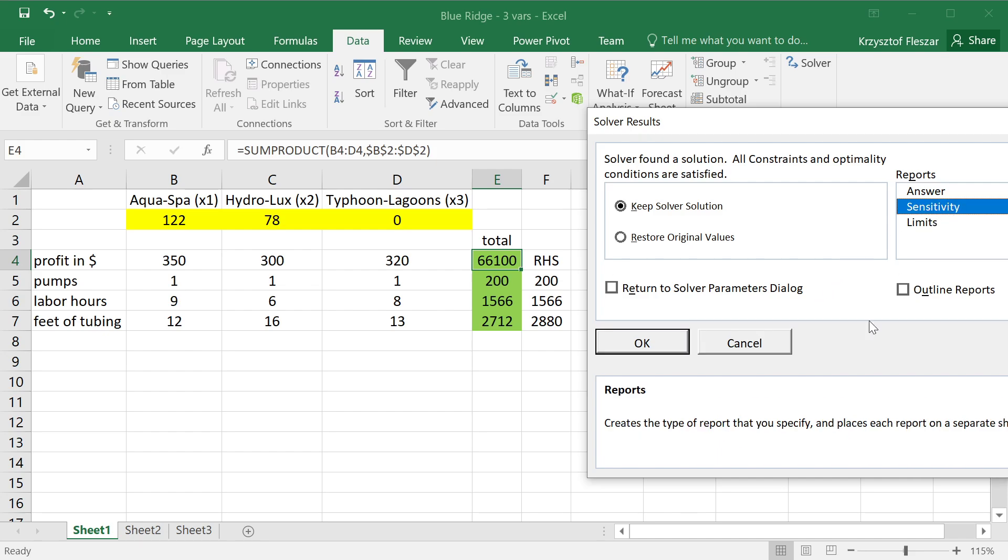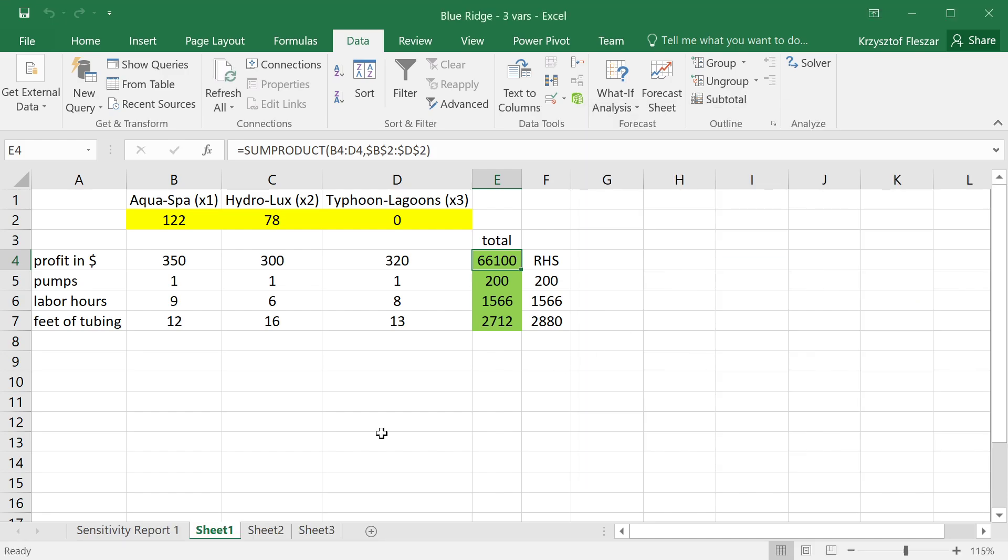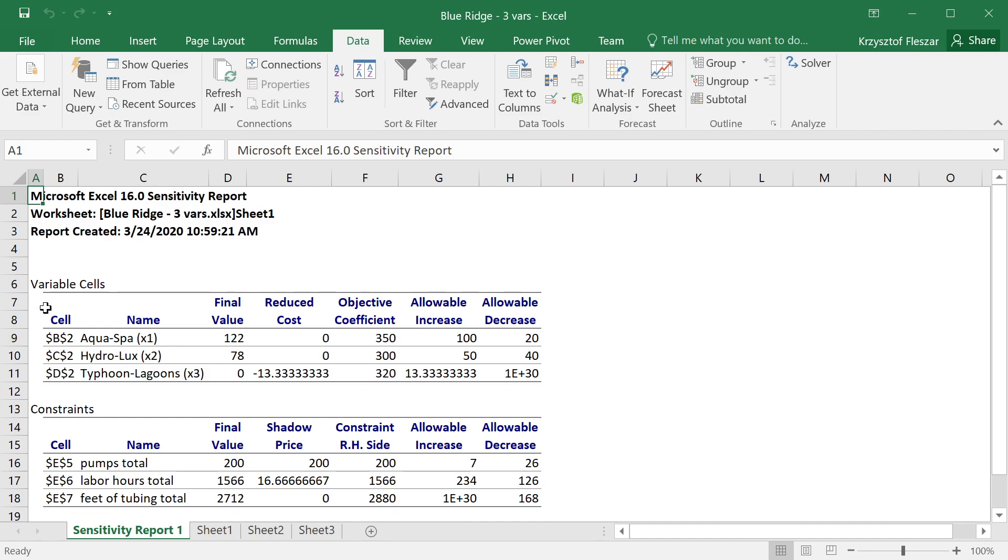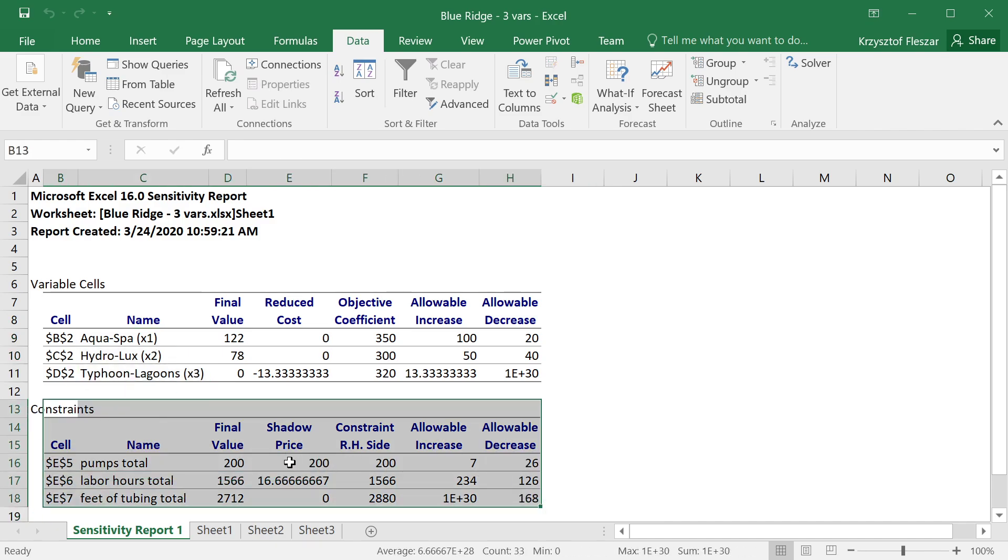And what I want you to now see is we will go to the sensitivity report. I'm going to generate the sensitivity report and I want you to see what we see here now. Now this sensitivity report is slightly different than we had before because now we have three decision variables. So the interesting thing is the constraints are the same as before, the shadow prices are the same as before, and even all the numbers here happen to be the same as before. However in the variables we see now the third decision variable. We of course have allowable increase and decrease for this objective coefficient but the interesting thing is the reduced cost and notice the value that we have here.